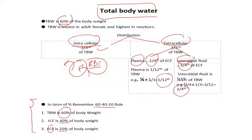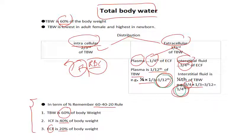To calculate further: plasma is one-fourth of extracellular, so one-fourth multiplied by one-third gives one-twelfth of total body water. Similarly, interstitial is three-fourths of one-third, which gives one-fourth of total body water. Remember these values: one-fourth, one-twelfth, two-thirds, one-third. And don't forget the 60-40-20 rule.